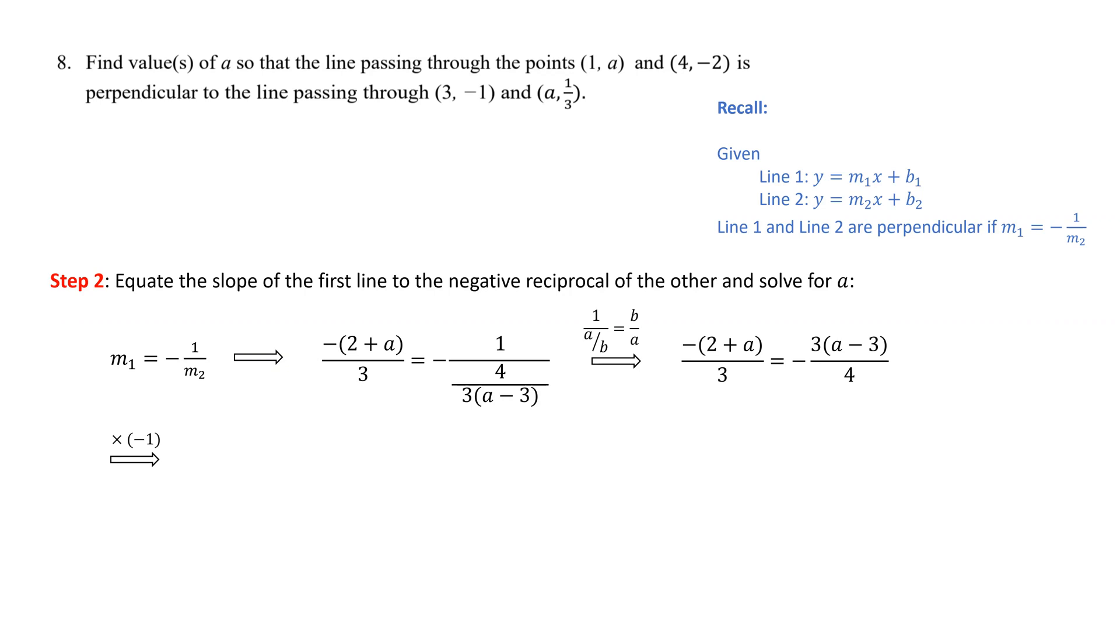We multiply both sides by -1 to eliminate both negatives. Then we cross-multiply to eliminate denominators: 4(2 + a) = 9(a - 3). Distributing 4 and 9 into the binomials gives 8 + 4a = 9a - 27.